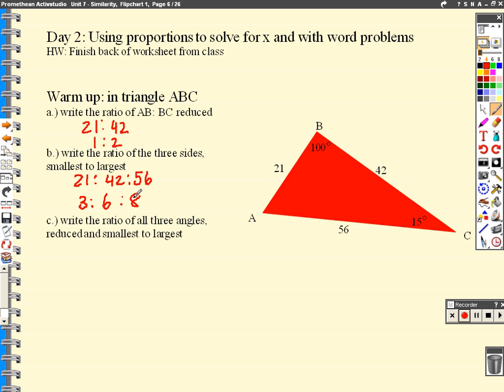Now we want to write a ratio for all three angles, reduced from smallest to largest. Well right now, all I see here is the 100 degrees right over here, and the 15 degrees here. Triangle sum theory says, how much should they add up to? Well, they should all add up to 180, which makes this side over here 65 degrees.